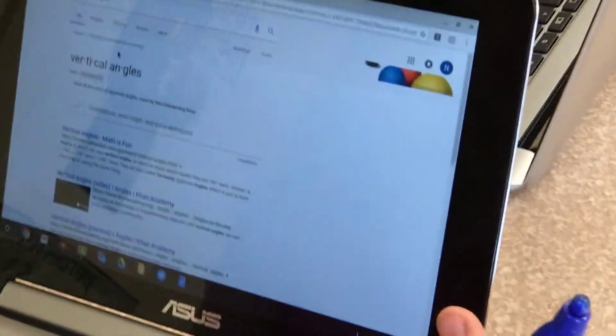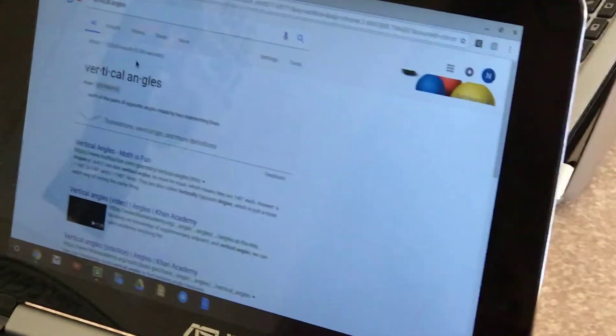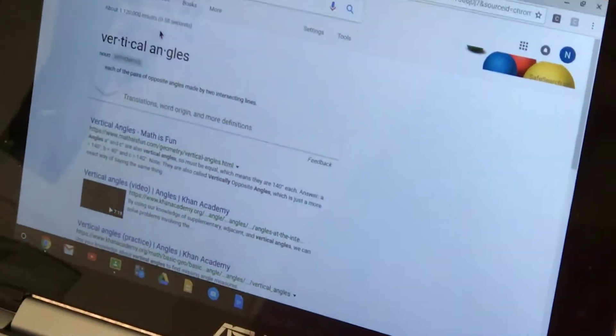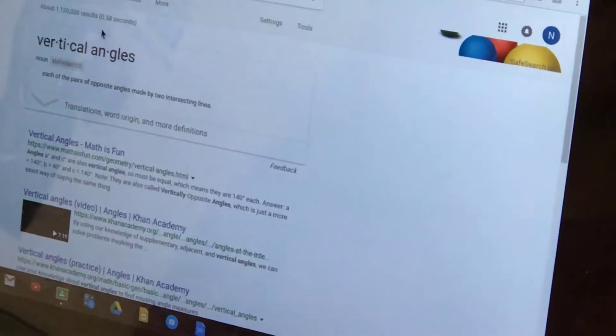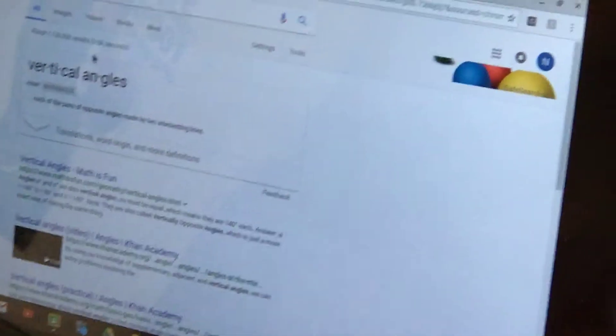We're learning about vertical angles and what they look like and what they are. What are vertical angles? Each of the pairs of opposite angles made by two intersecting lines. What does that mean?